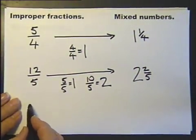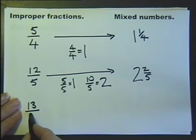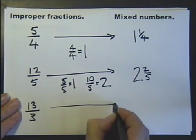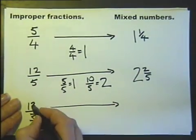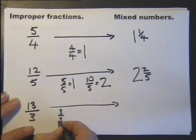One more for luck here. 13 over 3. That was a big decision, wasn't it? Let's change the improper fraction 13 over 3 to a mixed number.